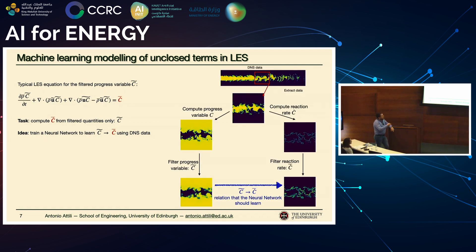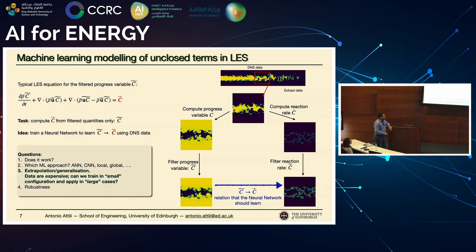How do you do this? You have your DNS data — large data with many samples. You compute C and its reaction rate, filter it to be consistent with the LES you want to perform, and you have an input field and output field for the neural network to learn. There are a number of questions: Does it work at all? And what kind of ML approach is reasonable? Artificial neural network, CNN, local or global representation? A very important thing I will focus on here is the extrapolation and generalization of these models.